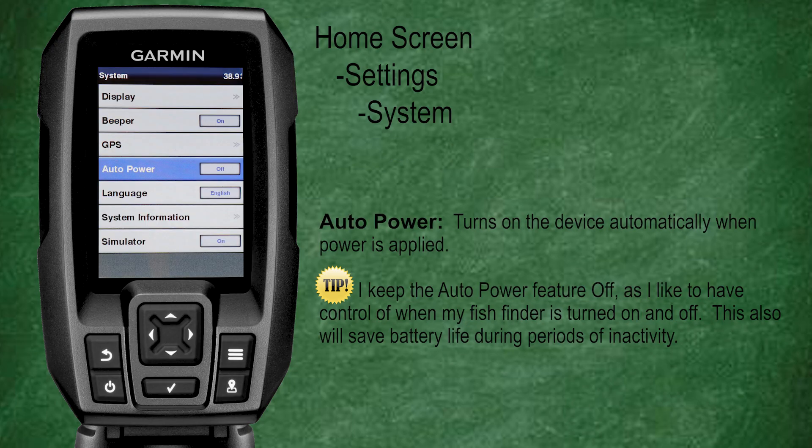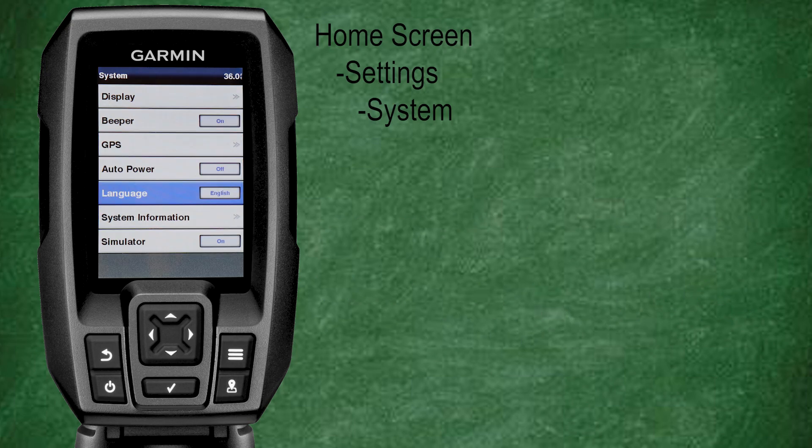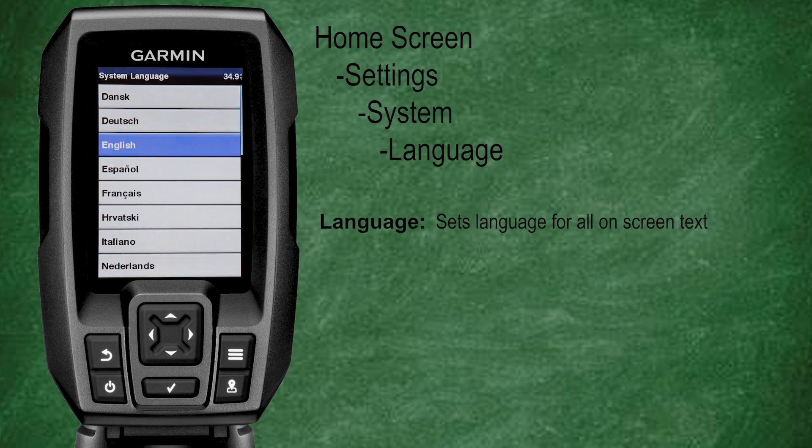Turning auto power to on will turn on the device automatically whenever power is applied. I personally keep it off since I like to have control of when the unit powers on and off. Under language you can set the preferred language for the text on your Garmin fish finder.